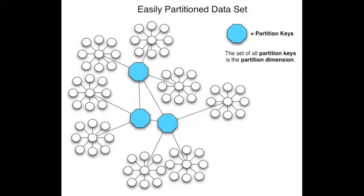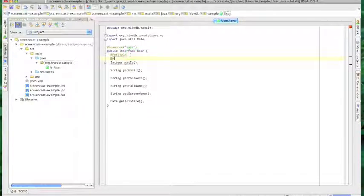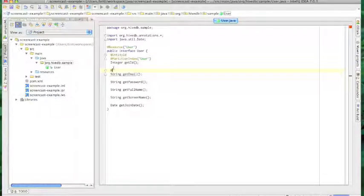This next one is going to take a little explaining. HiveDB uses a partition-by-key system, where we identify a significant dimension of the data and use that to divide the data set. So in our example data set, if you wanted to find out what node a track was located on, you would first ask who that track belongs to, and then look up what node the user was stored on. You have to identify the partition dimension for each entity you want in the store, and you do this by adding the partition index annotation to a property of the entity.